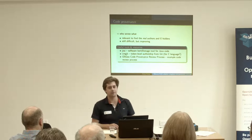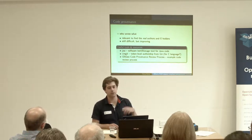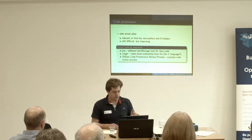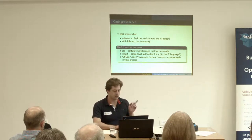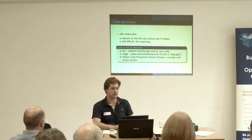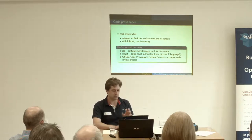Those are the relevant people regarding licensing and copyright infringement, because you have to get permission from them to use the code in the first place. Most people don't think about that, but this is the most difficult step still. Because figuring out who wrote what — even in the days when we have Git and git blame and all those tools — is still relatively tough, though it's improving.